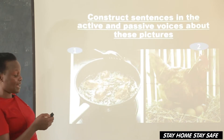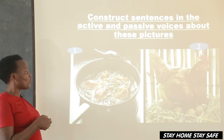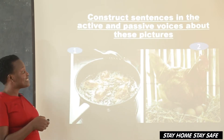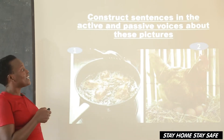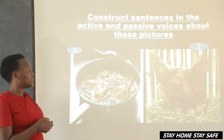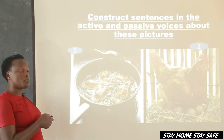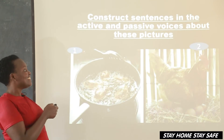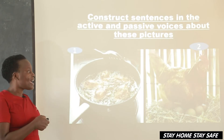Now we are going to construct sentences about these pictures. Picture number one — active voice first. Maybe there is a chef and he's frying potatoes, so we say: 'A chef has fried potatoes.' Now we change to passive voice — what has happened to the potatoes? We say: 'The potatoes have been fried by the chef.'